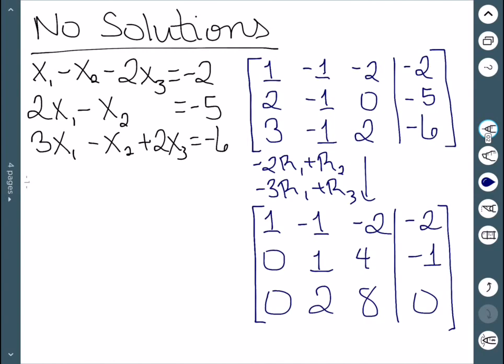To get rid of the top 0, we can just add row 2 plus row 1. And to get rid of the 2 in the third row, we would need to do negative 2 row 2 plus row 3.